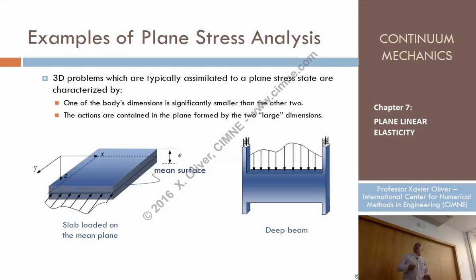What are the kinds of problems in which this idealization is proper? The ones that are shown here. Thin structures, which are loaded in the plane. For instance, a slab like that, which is only loaded in the mean plane. Typically, in civil engineering structural analysis, is the case of deep beams.